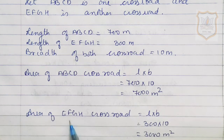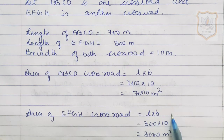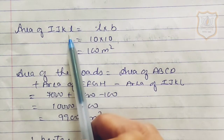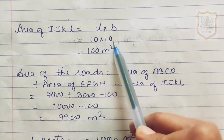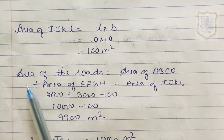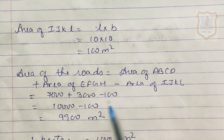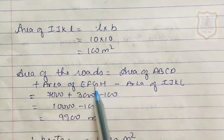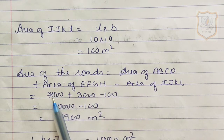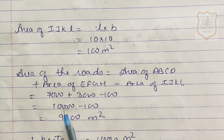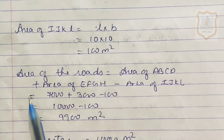Area of EFGH crossroad: length into breadth where length is 300 and breadth is 10. So 300 multiplied by 10 is 3000 meter square. Area of IJKL road: length multiplied by breadth where both length and breadth are 10, so 10 multiplied by 10 is 100 meter square. Area of roads equals area of ABCD plus area of EFGH minus area of IJKL. That is 7000 plus 3000 minus 100, which gives 9900 meter square.